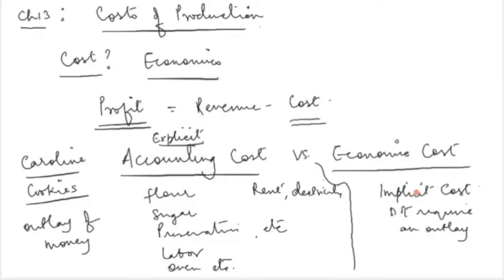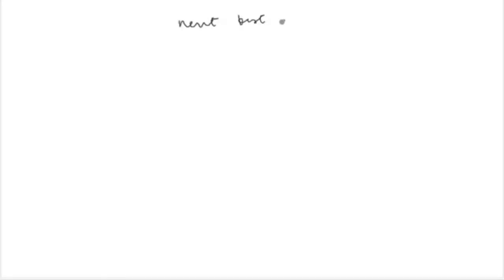Implicit costs are costs which do not require an outlay of money — you do not really have to spend anything for these costs. Implicit costs are nothing but the opportunity costs of the operation. For example, in Caroline's cookie business, she incurs an implicit cost by losing what she could have done instead of producing cookies, which is the opportunity cost. In economics, we treat opportunity cost as the monetary value of the next best alternative.